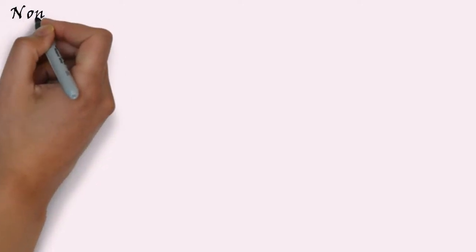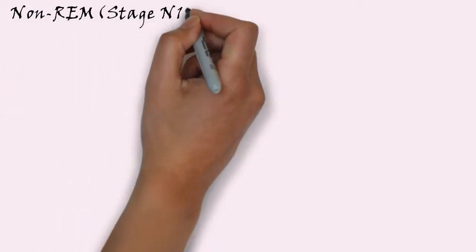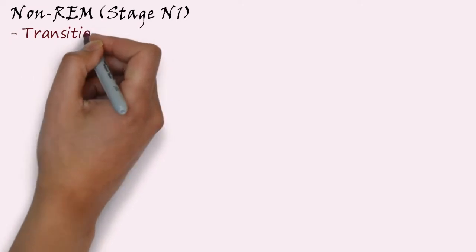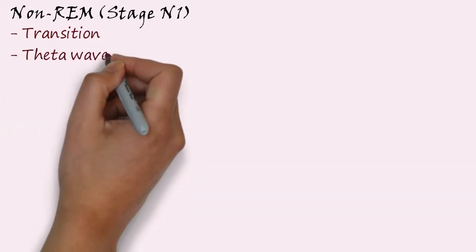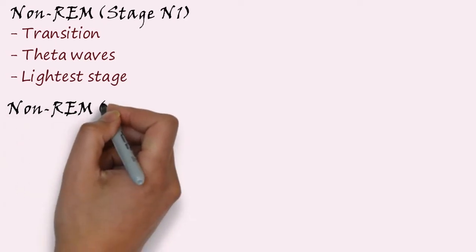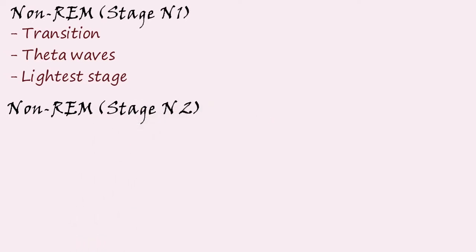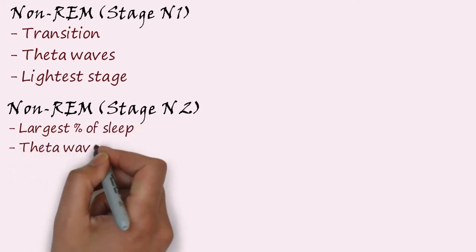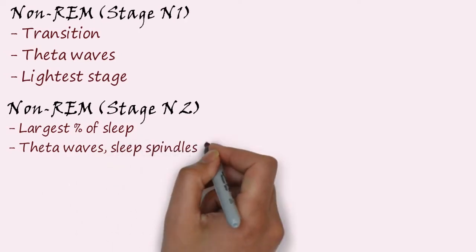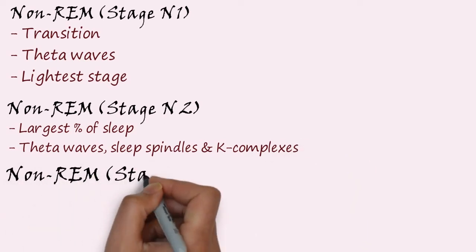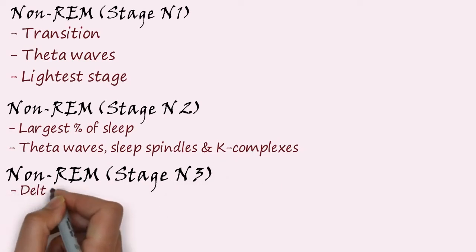Non-REM stage N1 is the transition stage between wakefulness and sleep, characterized by theta waves, and it is the lightest stage of sleep. Non-REM stage N2 comprises the largest percentage of sleep and is characterized by theta waves, sleep spindles, and K-complexes.